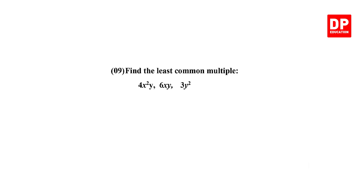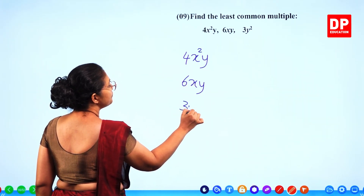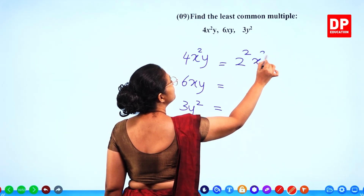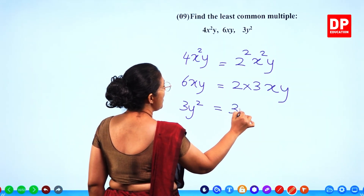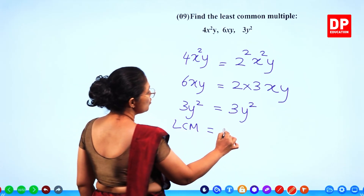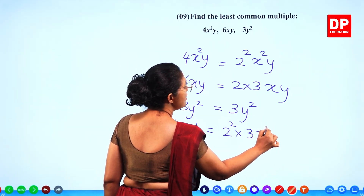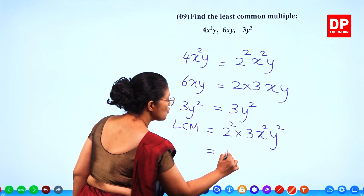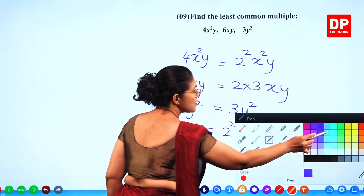Question number 9: find the least common multiple. Write separate factors first: 4 is 2 squared, 6 is 2 times 3. Find the highest power of each: 2 squared is the maximum power of 2, and 3 appears just once. So the LCM is 2 squared times 3 equals 12. The LCM is 12x squared y squared. That's also 2 marks.